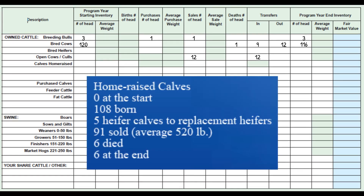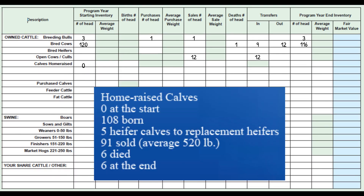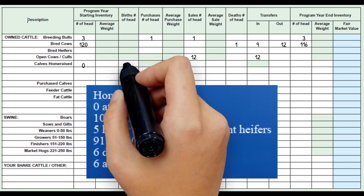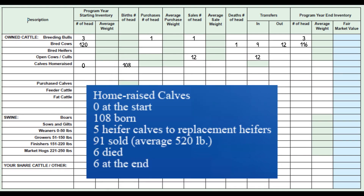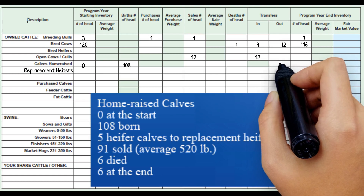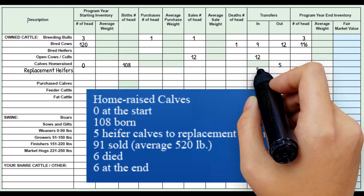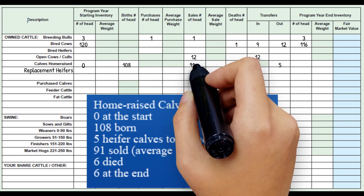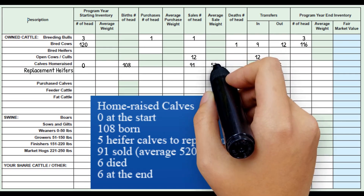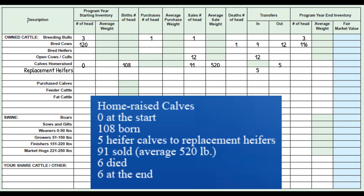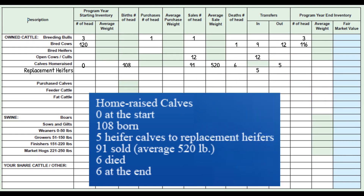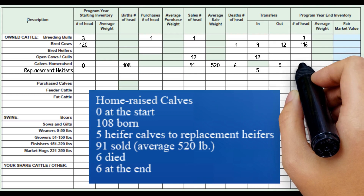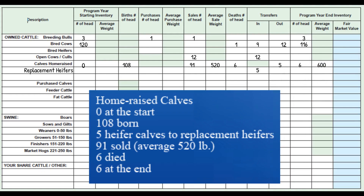Now let's look at the home raised calves. Joe started with none. One hundred and eight were born. Five heifer calves were transferred as two replacement heifers during the year. Ninety-one were sold at an average of 520 pounds. Six died during the year, leaving six calves at about 600 pounds at the end of the year. That completes the home raised calves row.